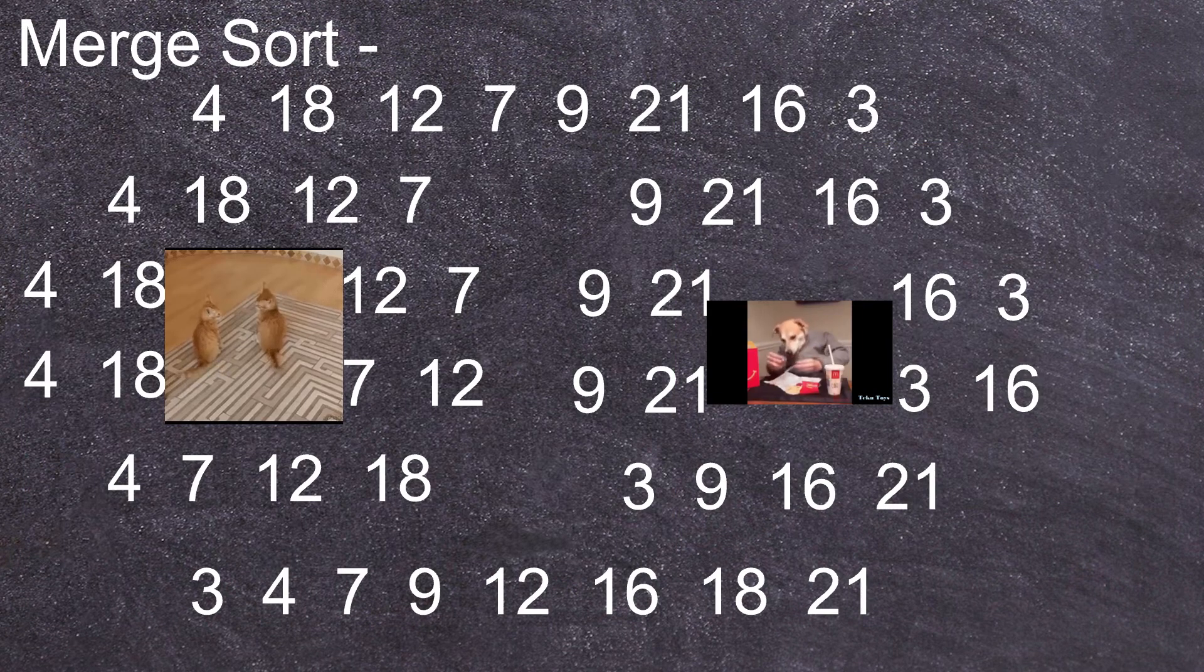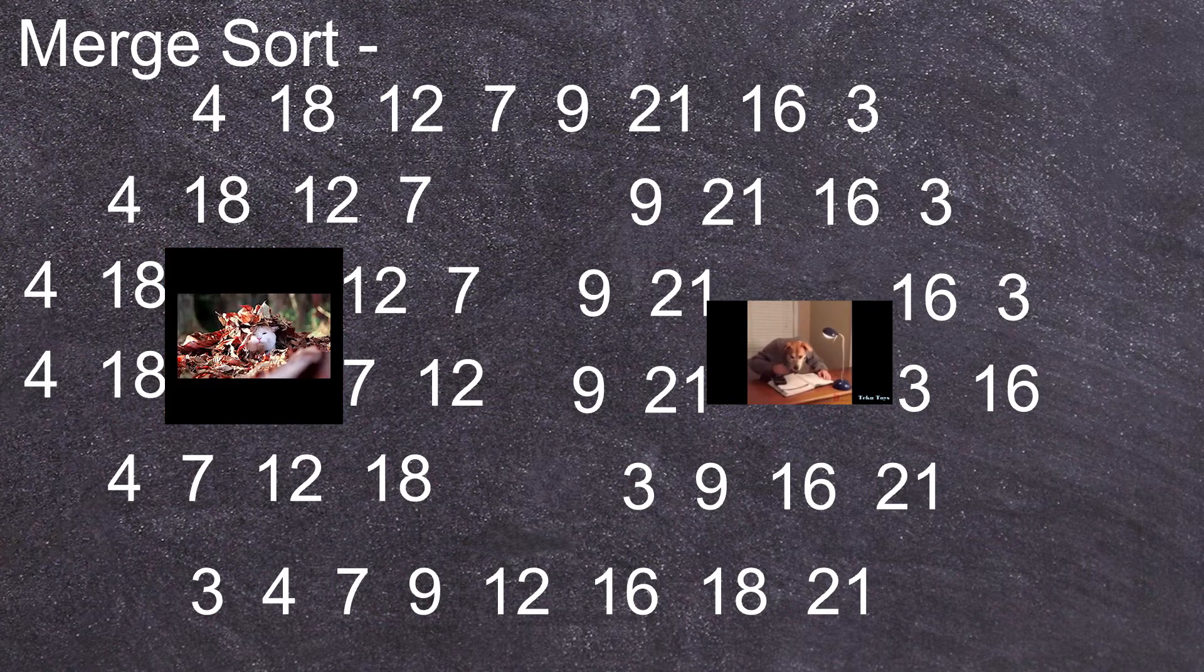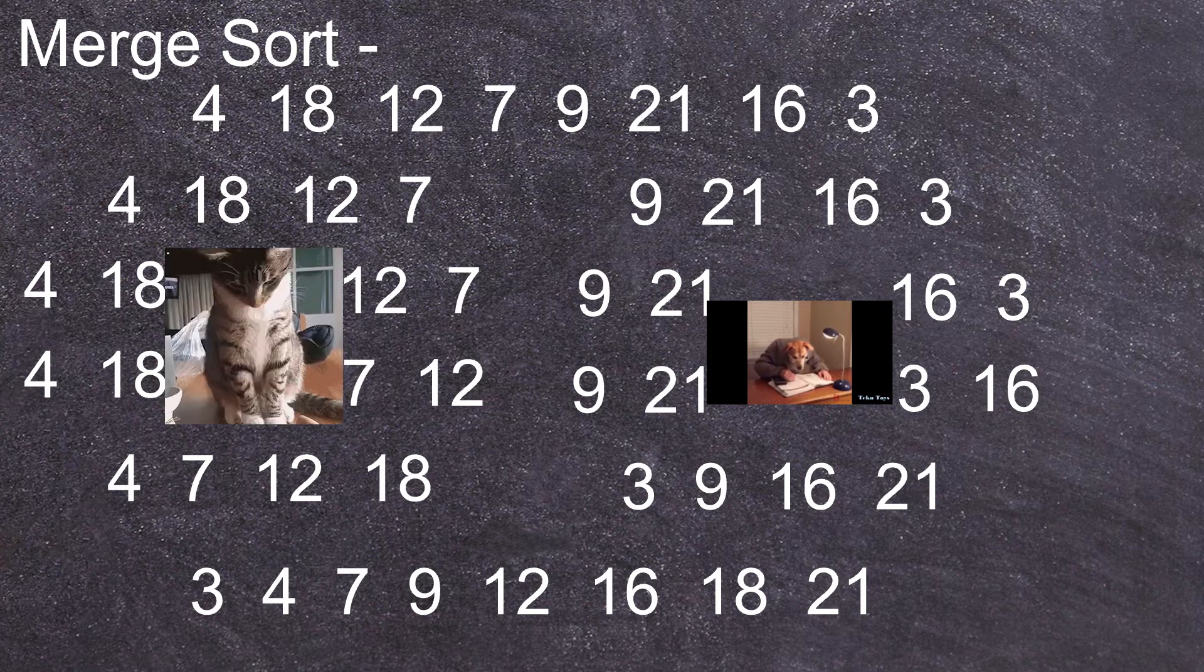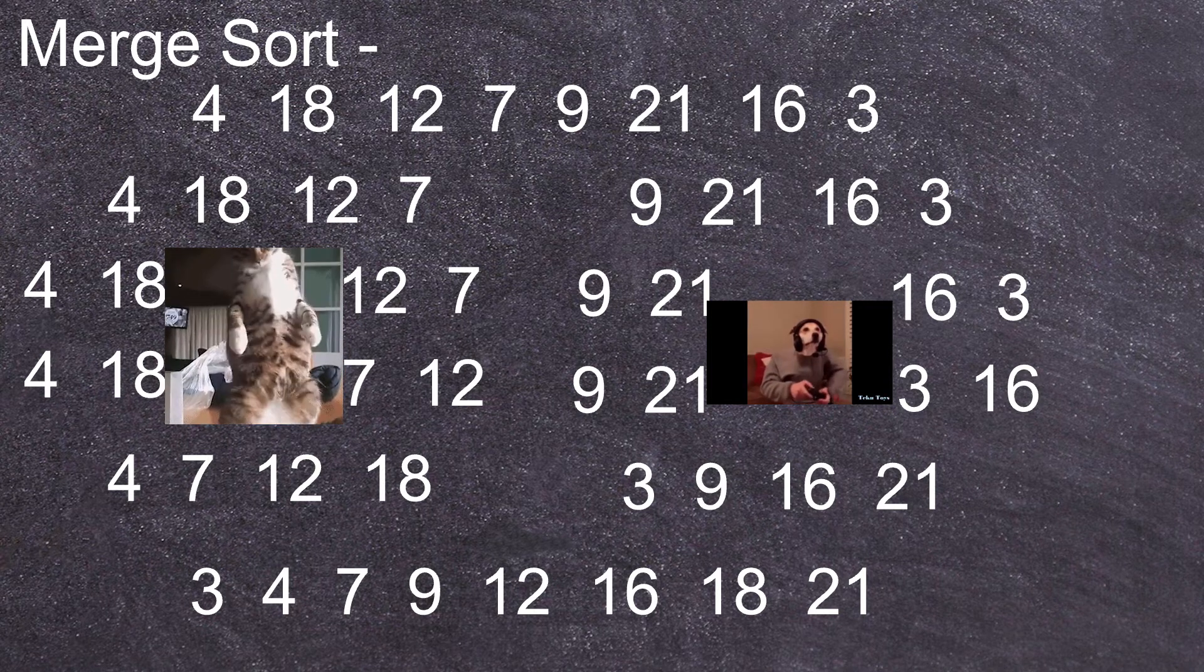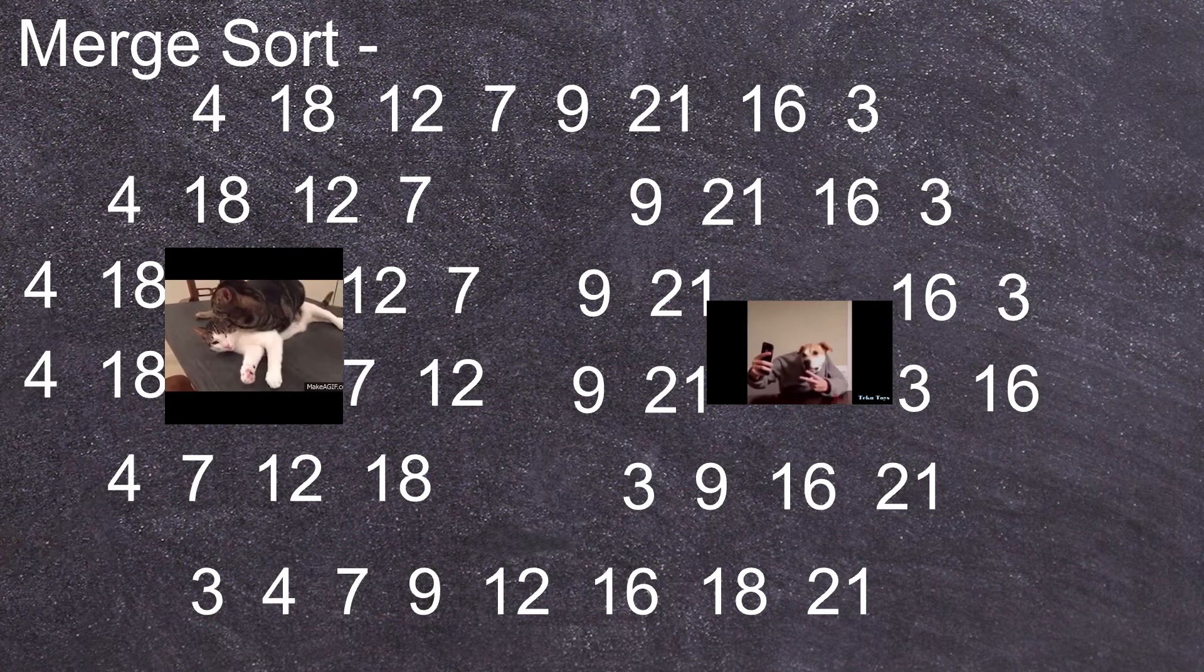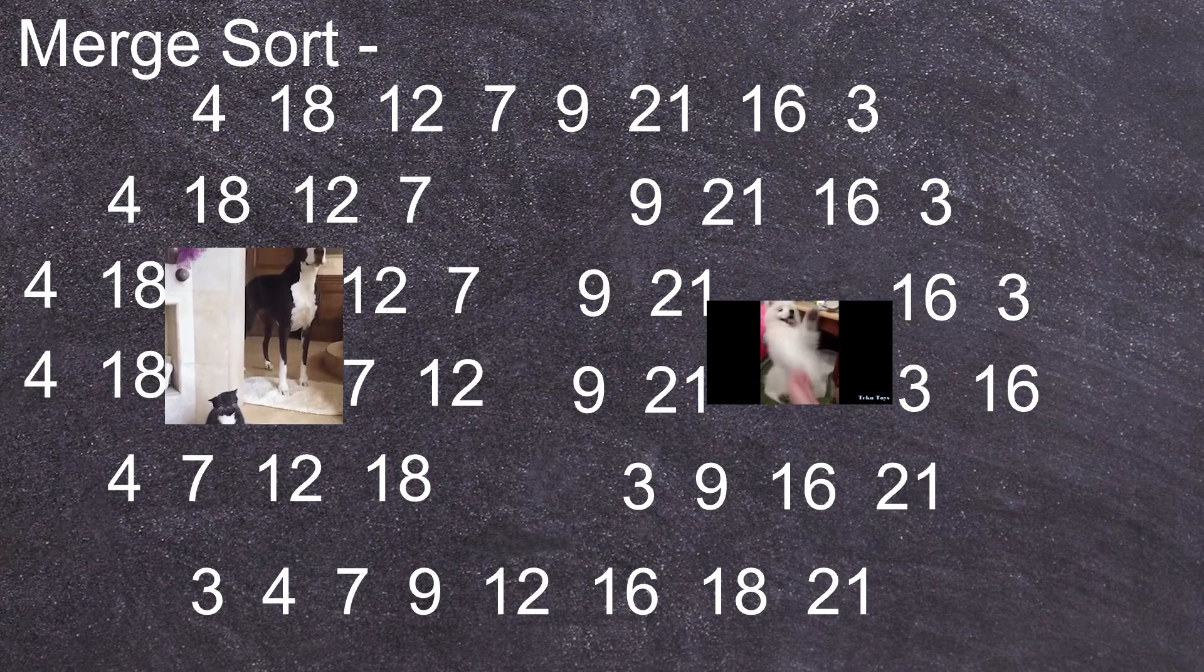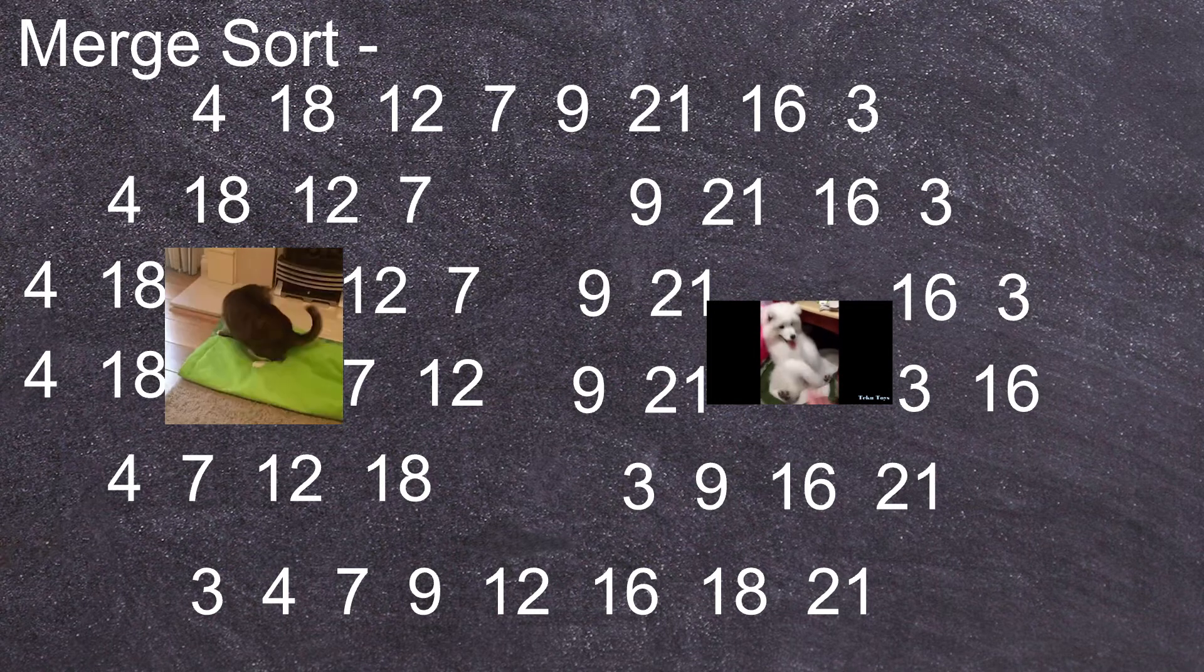And finally there is the merge sort. In this method a list is split into two, then split again. This process continues until the lists only contain two items each. These items are then either swapped or stay in the same place. They are then merged with the list they split from and are ordered once more. This process then repeats until the list is completely ordered.